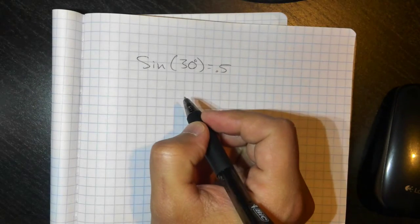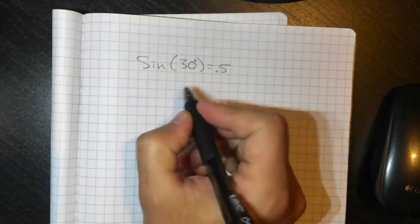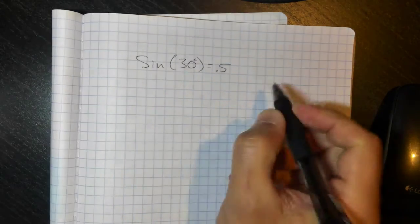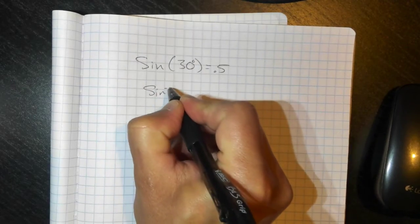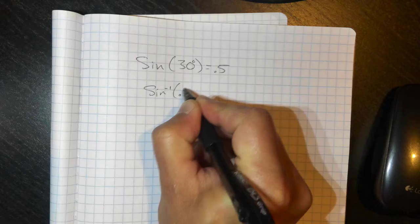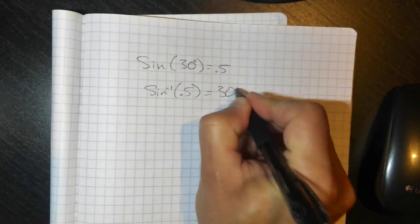So inverse sine is undoing it. If I want to unsine a sine, if I were to do inverse sine of 0.5, I should get my 30 degrees back again.